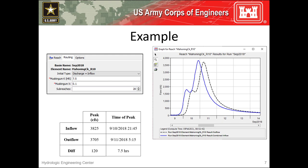The inflow hydrograph is uniformly translated in time by 7.5 hours, which is controlled by and equivalent to the k parameter. I want to stress the 'uniformly translated' portion — all points along the curve are translated by that much: the peak, the centroid of mass, everything. The peak of the inflow hydrograph is reduced by 120 CFS, which is controlled by the x parameter and number of sub-reaches.